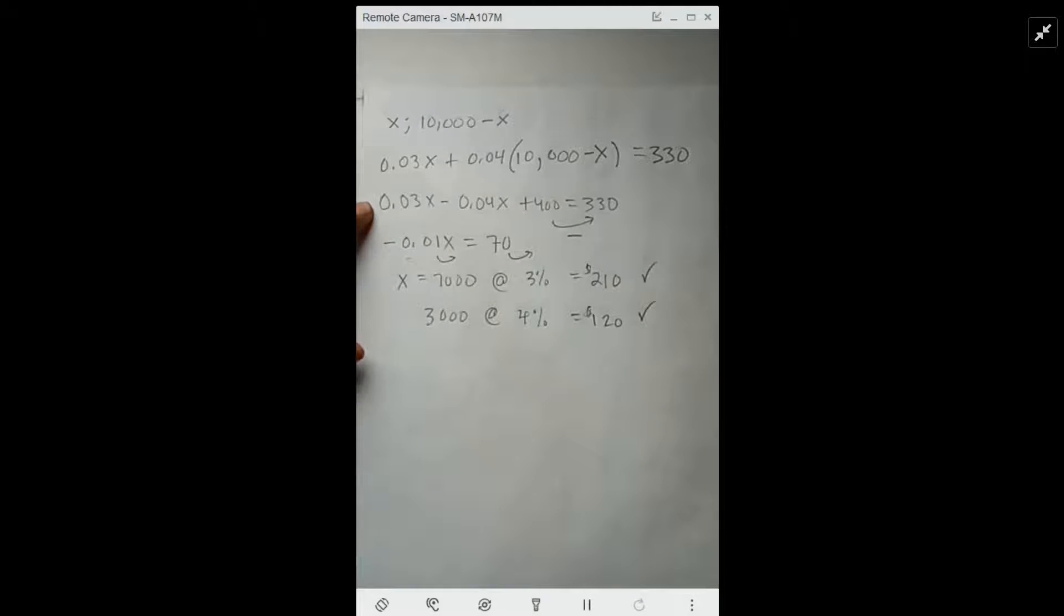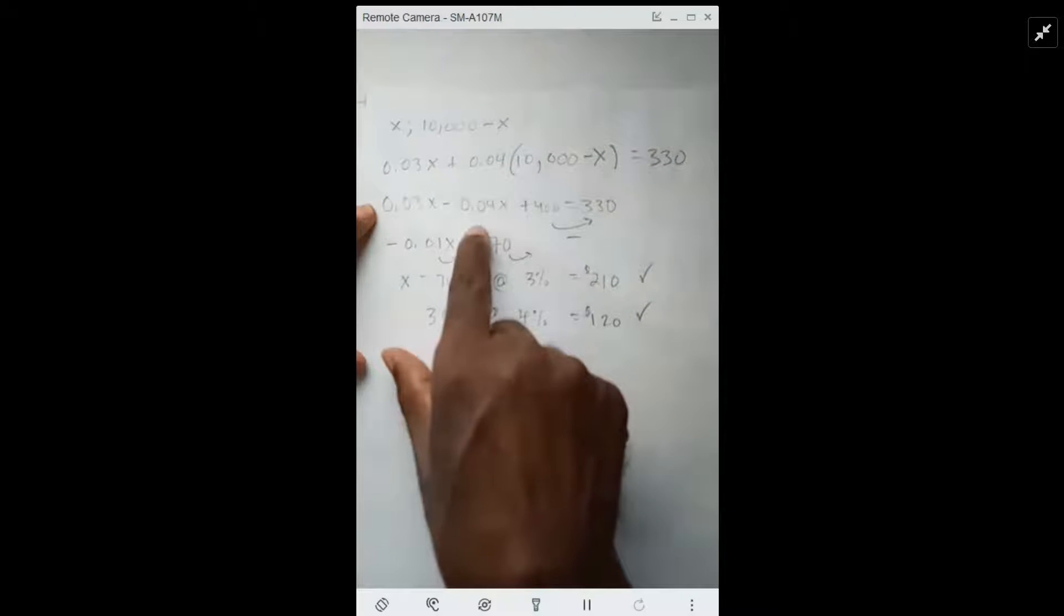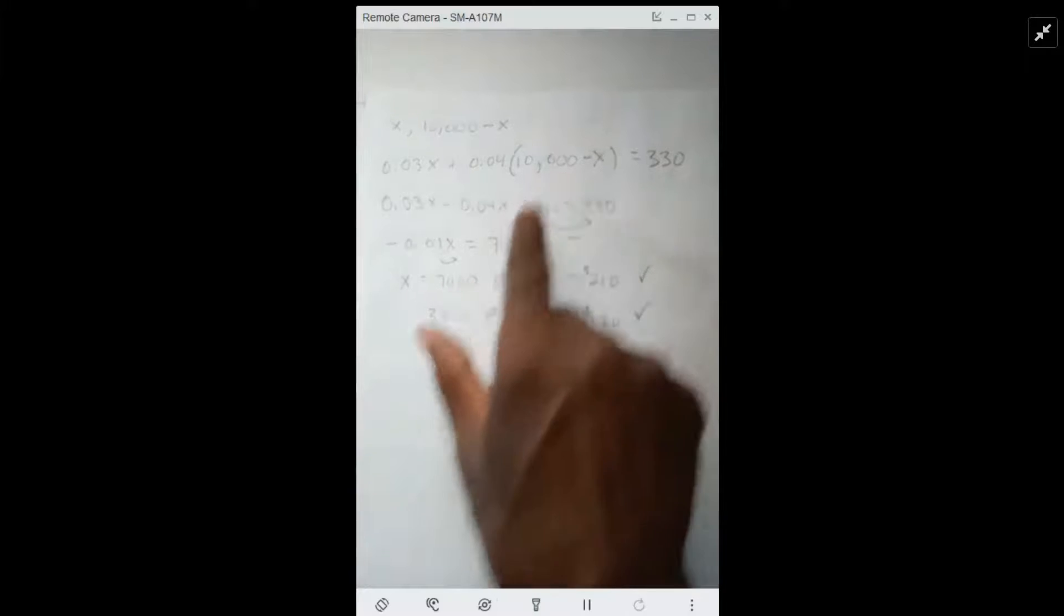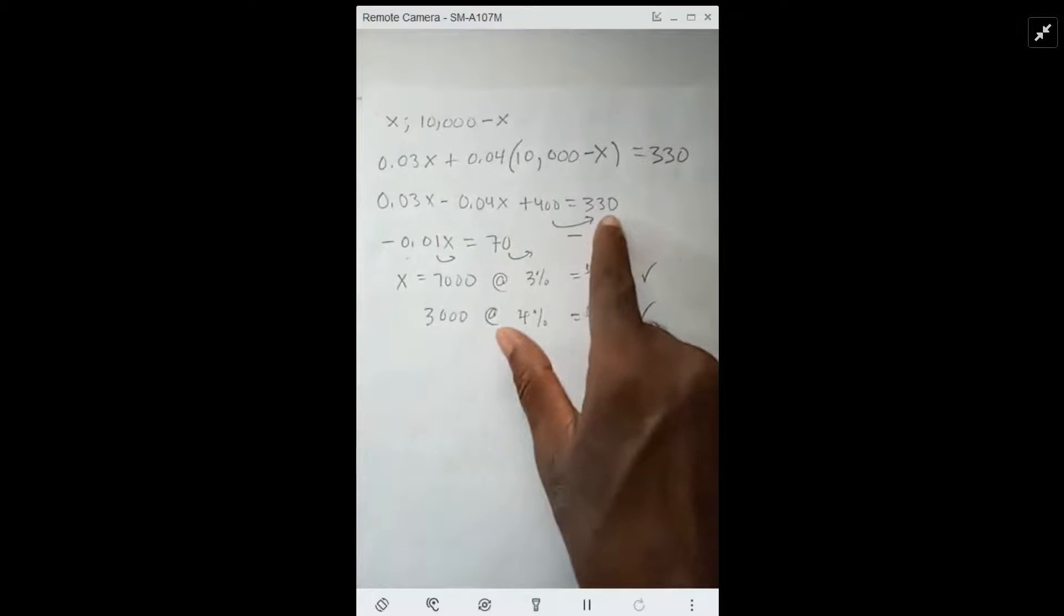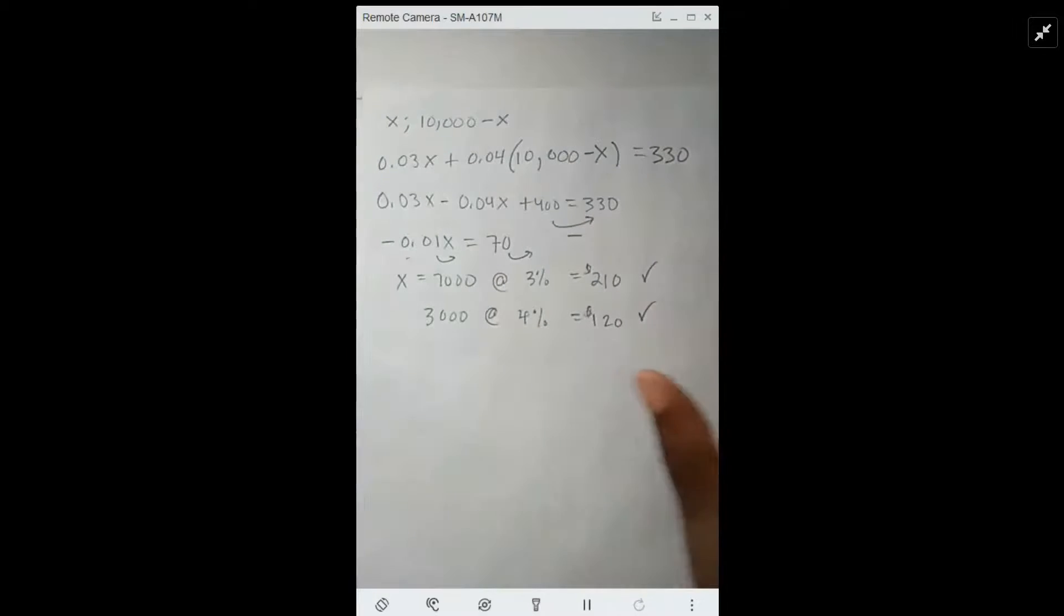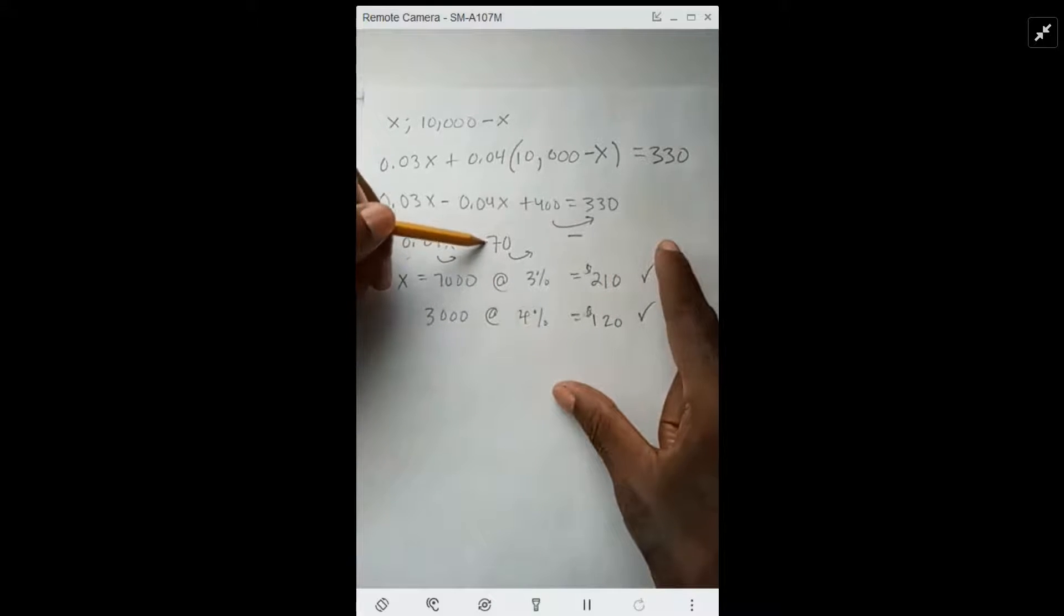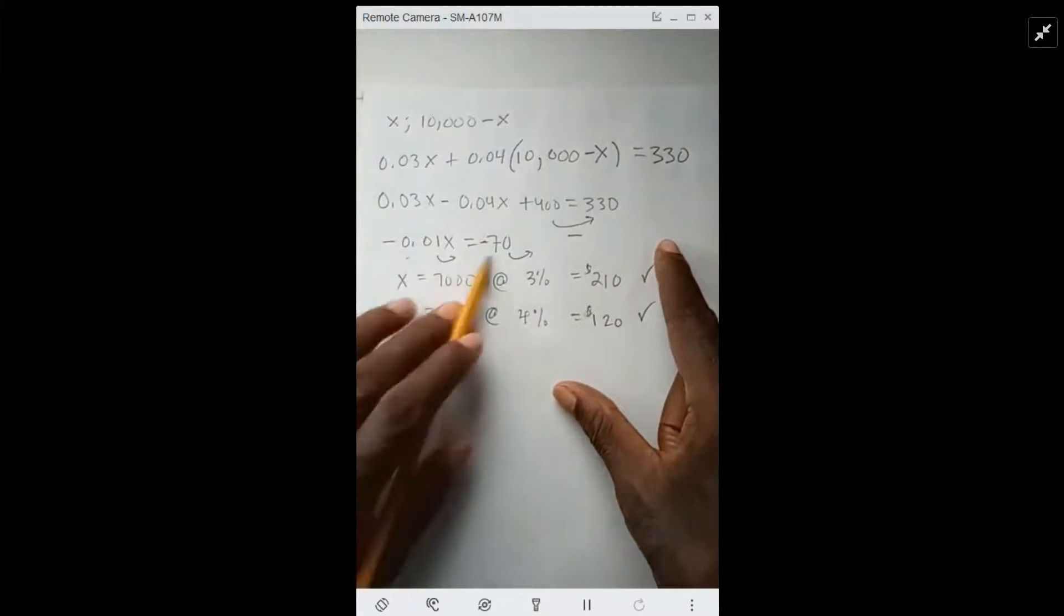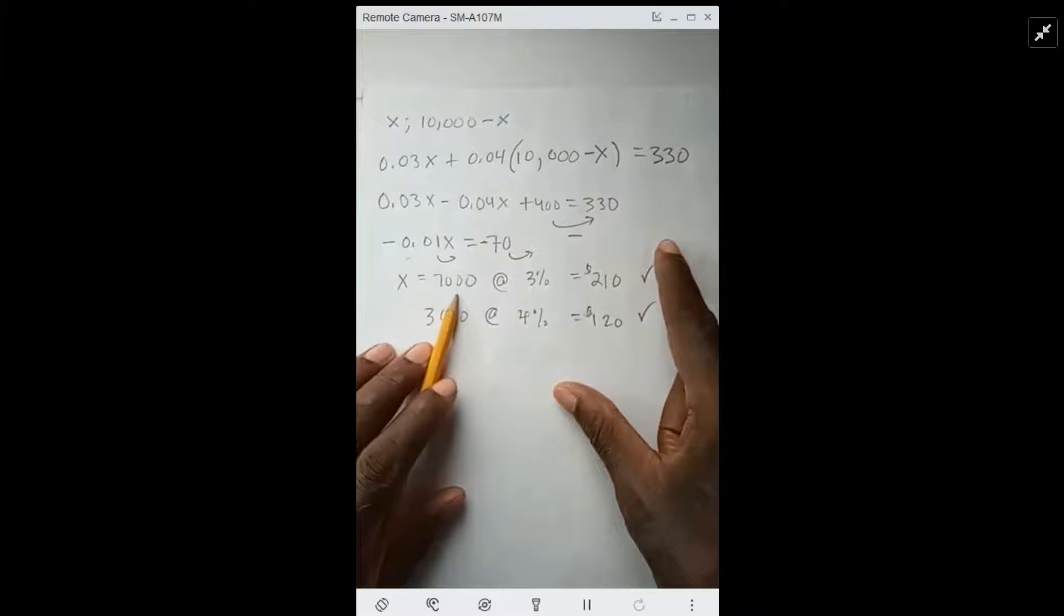I'm going to subtract 400 from the left side. 0.04 times 10,000 - I'm going to subtract that from the left side. When I take it across the equal side it becomes negative, so that's going to be negative 70. I'll divide both sides by negative 0.01, which gives me x equals 7,000.